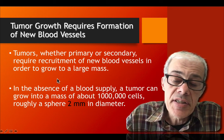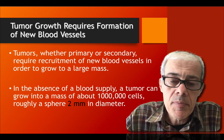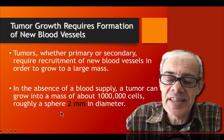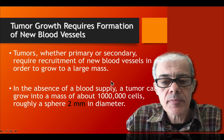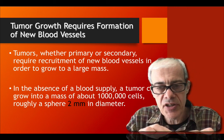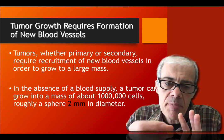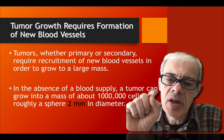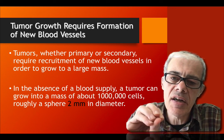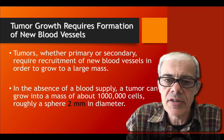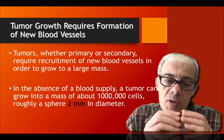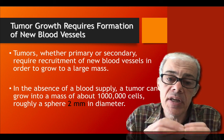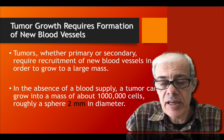If a tumor establishes itself in a new tissue — whether primary or secondary — it can only reach a certain size before growth is naturally limited. A population of about one million cells forms a tiny sphere of about one to two millimeters in diameter, and that is roughly the limiting size for cells not directly linked to a blood supply. Within that small sphere, there is a lack of oxygen and nutrients in the middle, and those cells tend to die, naturally limiting the tumor to a small size.